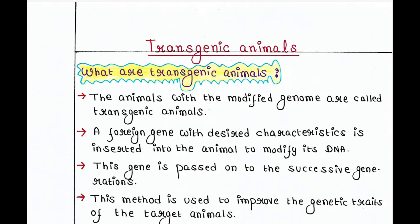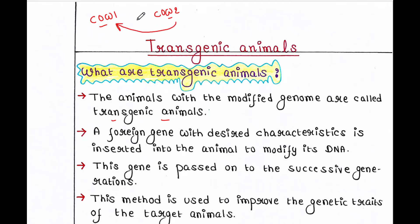So what are transgenic animals? The animals with a modified genome are called transgenic animals. Suppose you have a cow and you want it to produce more protein-enriched milk, and suppose your friend has another cow which makes that protein-enriched milk. You get that gene from your friend's cow and put it in your cow. Now your cow is called a transgenic cow — a transgenic animal — and it will also produce protein-enriched milk.